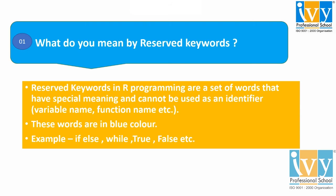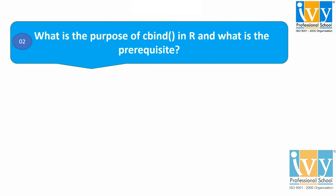The reserved keywords are always blue in color. Moving to the next question: What is the purpose of cbind in R and what is the prerequisite for it?